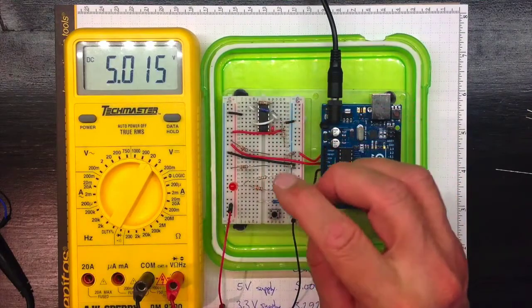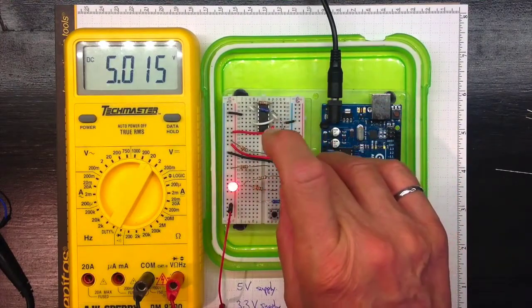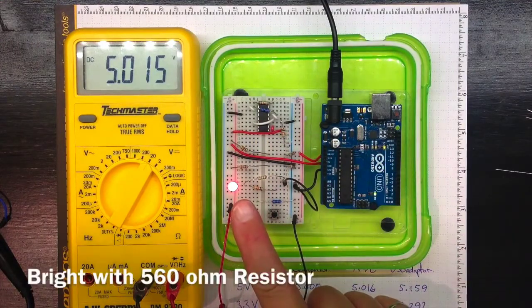First, I'll complete the circuit with this resistor here. And we see a nice bright indication on the red LED.